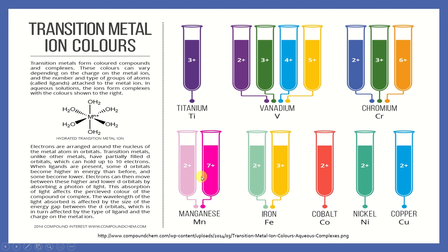Furthermore, if you change the charge of the metal ion — look at vanadium here — oxidation number 2+ gives purple, 3 gives green, 4 gives blue, and 5 gives yellow. Not only this: if you change the ligand surrounding the metal ion, the color will change as well. So this is why this group of compounds is quite important.